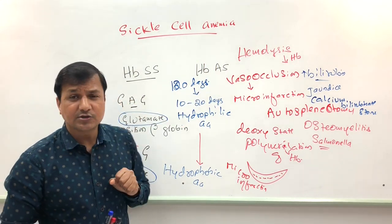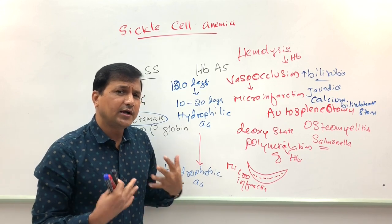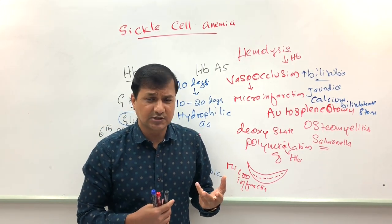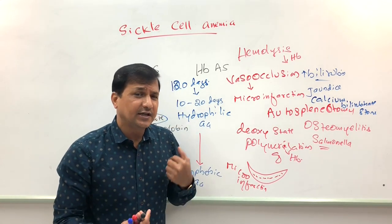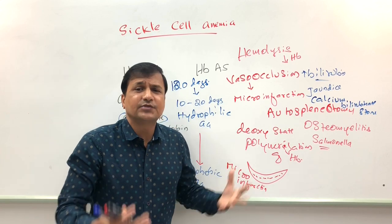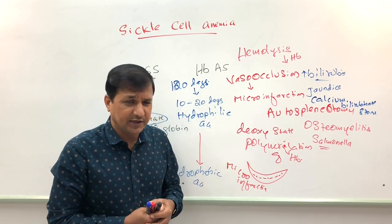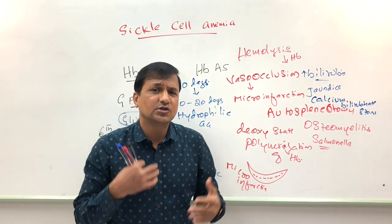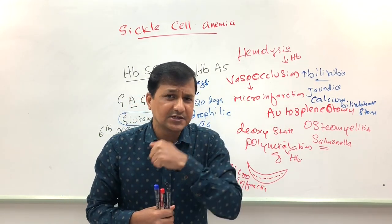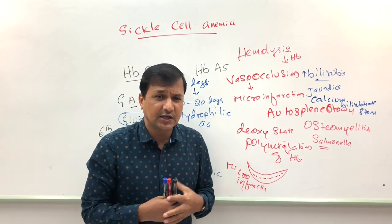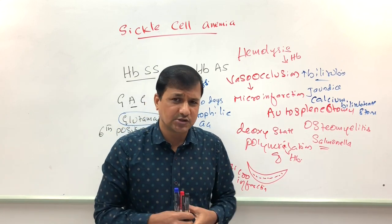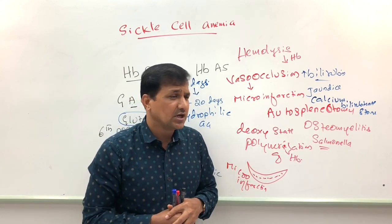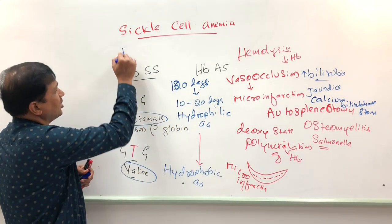Treatment aims to prevent going into the deoxy condition — avoiding infections, excessive exercise, abrupt temperature changes, and vigorous physical activity. During a sickle cell crisis, severe pain occurs due to micro-infarctions, so analgesia and hydration are important — hydration helps prevent increased viscosity from polymerization. Another approach is to use the drug hydroxyurea.